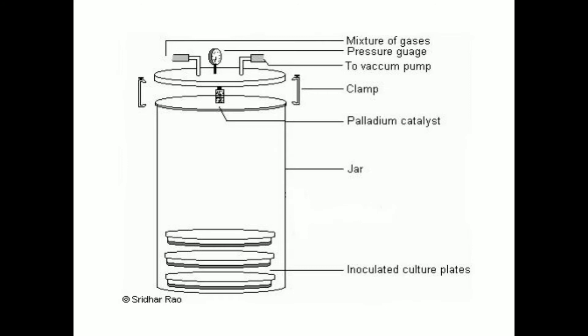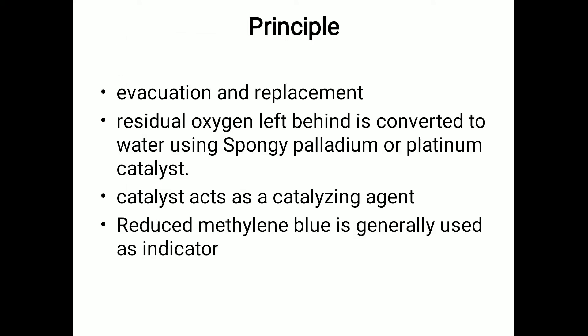Now, what is the principle behind this? The Macintosh and Fildes anaerobic jar works on the principle of evacuation and replacement, where the air inside the chamber is evacuated and replaced with a mixture of gases consisting of 5% carbon dioxide and 85% nitrogen. It is practically impossible to evacuate all the air, so some residual oxygen will still be left behind.